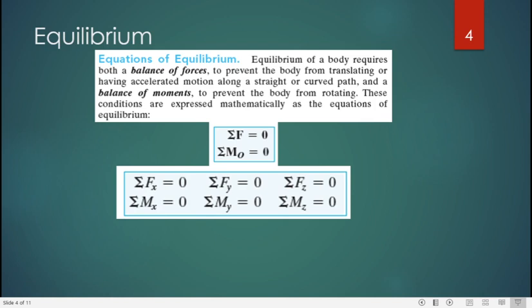In 3D quantities in coordinate system, this equation can be resolved into respective three components: sigma Fx should be zero, sigma Fy should be zero, sigma Fz should be zero, sigma Mx should be zero, sigma My should be zero, sigma Mz should be zero.